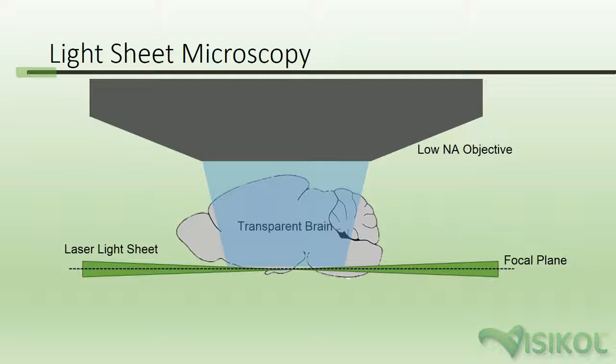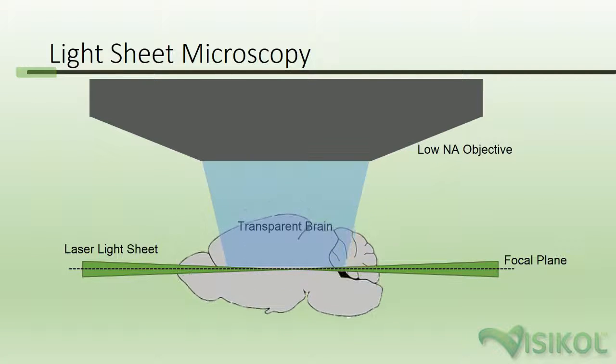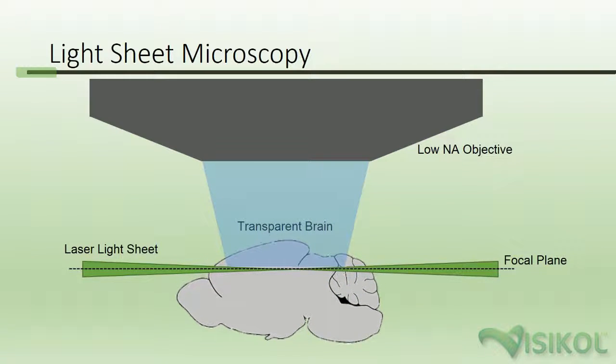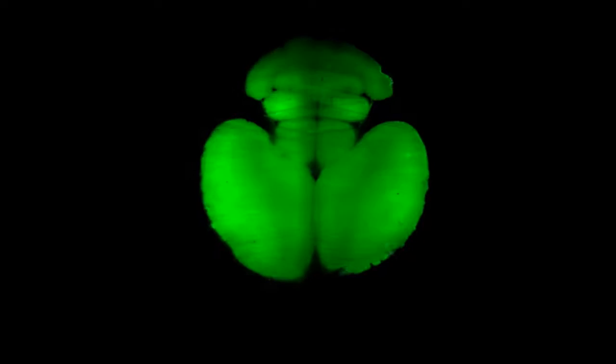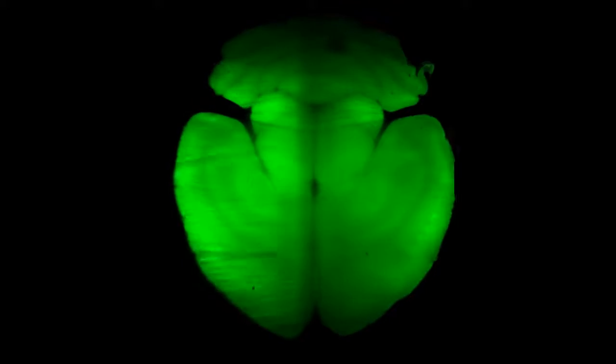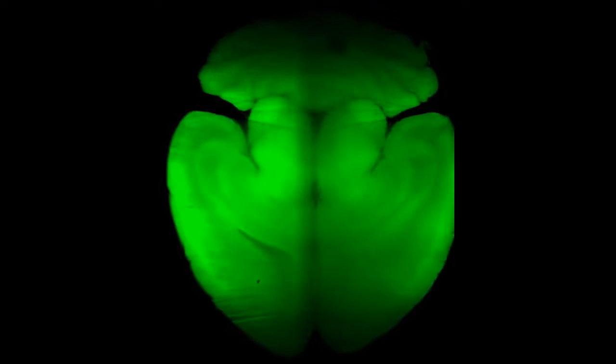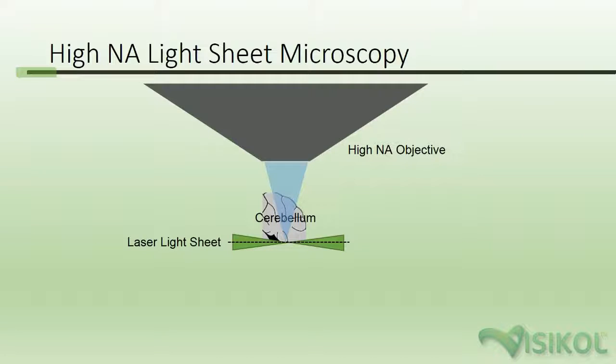Therefore, the objective only captures the emission of fluorophores in this thin light sheet. By then moving the sample through the light sheet and capturing images as the tissue is moved, a Z-stack of images can be acquired from the entire depth of the tissue. This process can be clearly seen here where a whole mouse spinal cord cleared tissue is imaged for autofluorescence using an Ultra Microscope from LaVision. The streaking in the tissue is caused by refractive index mismatches in the mounting solution that cause optical aberrations.